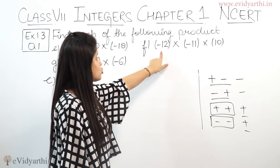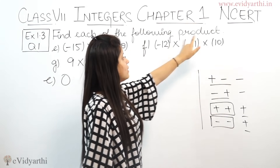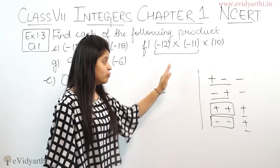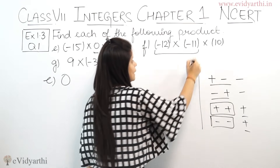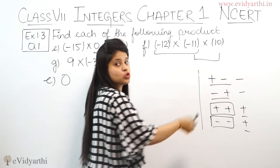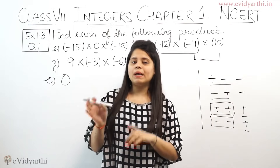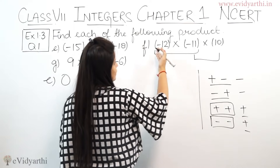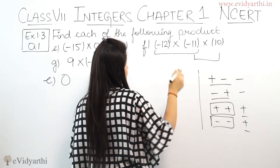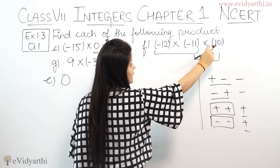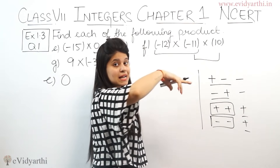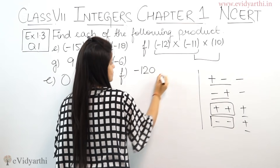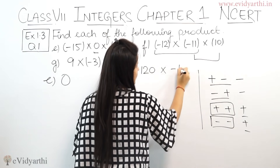Part F is minus 12 × minus 11 × 10. You can pair any two of them first. Let's multiply 12 and 10 first — that gives 120 directly. But checking the sign: 10 is positive and 12 is negative, so plus × minus = minus 120. The remaining number is minus 11.